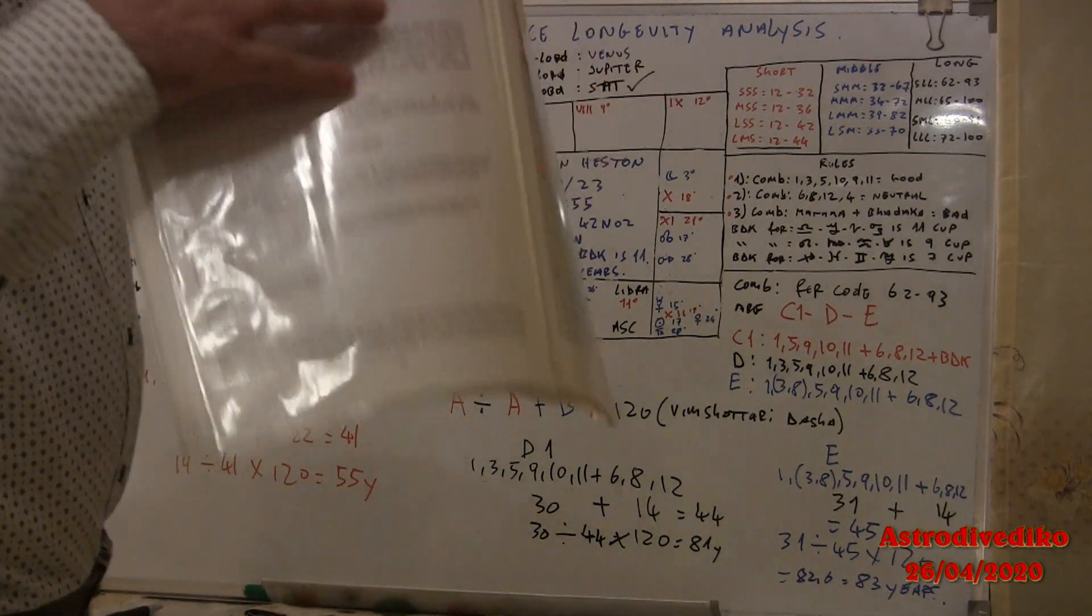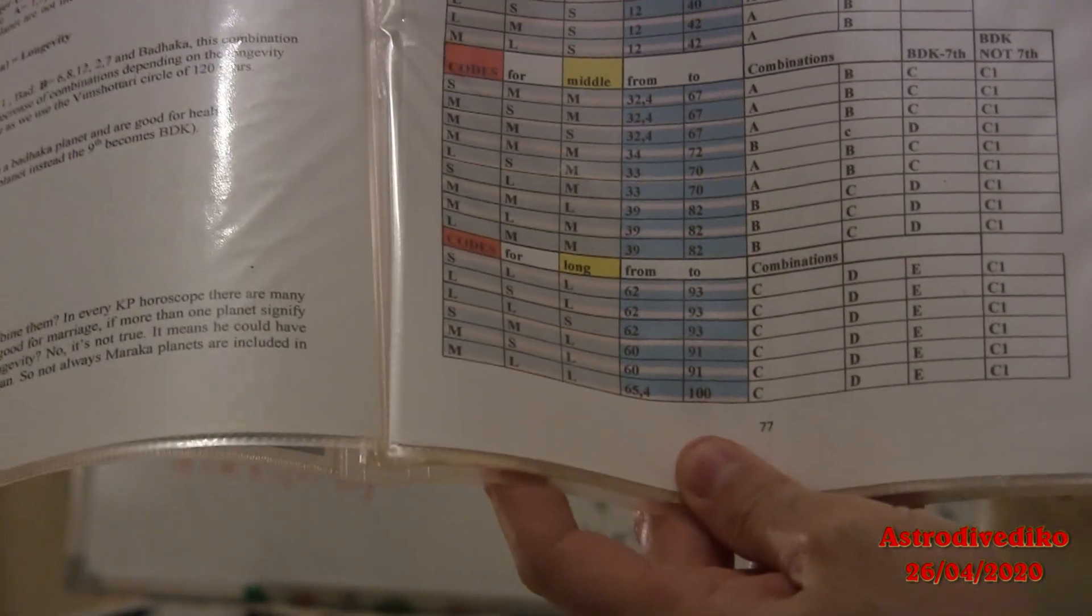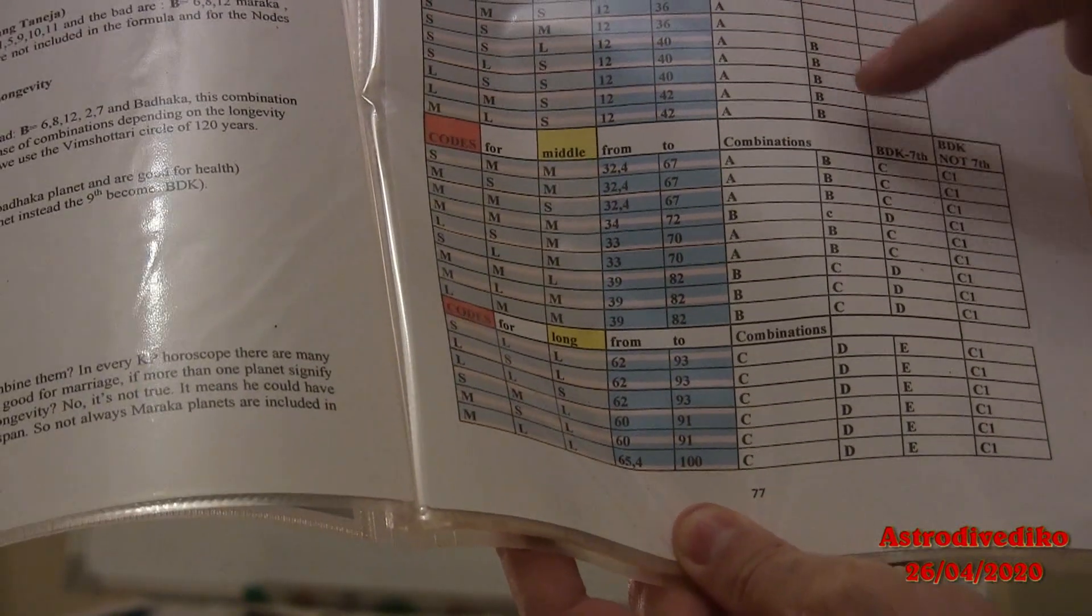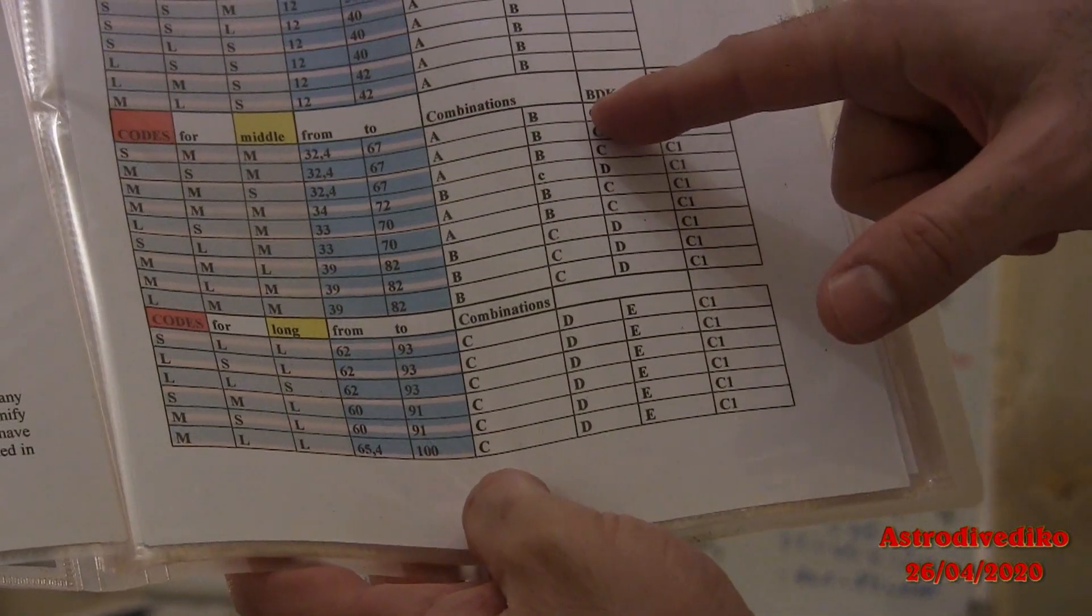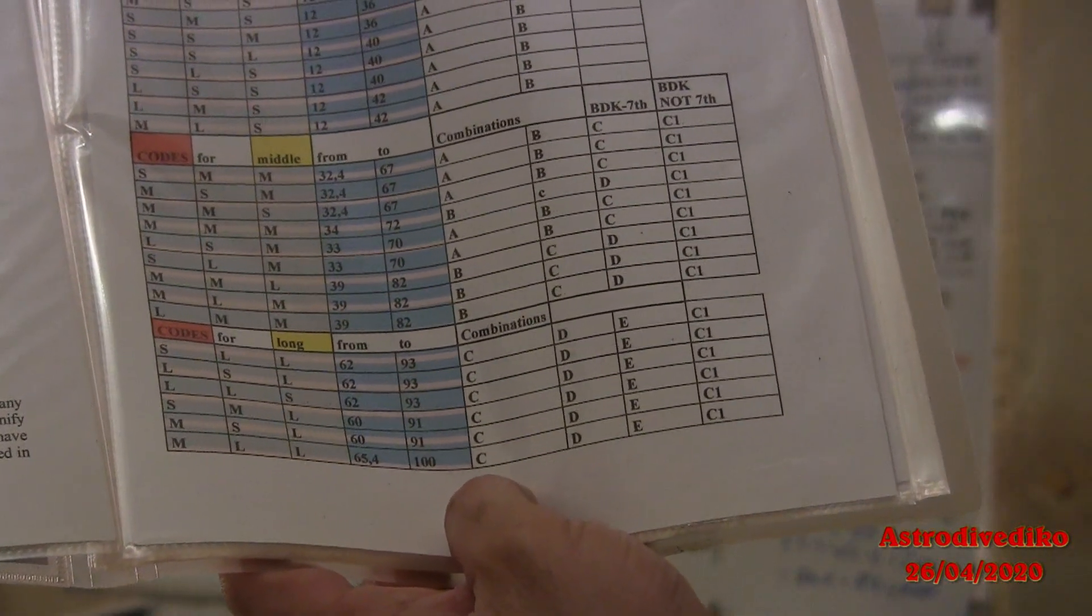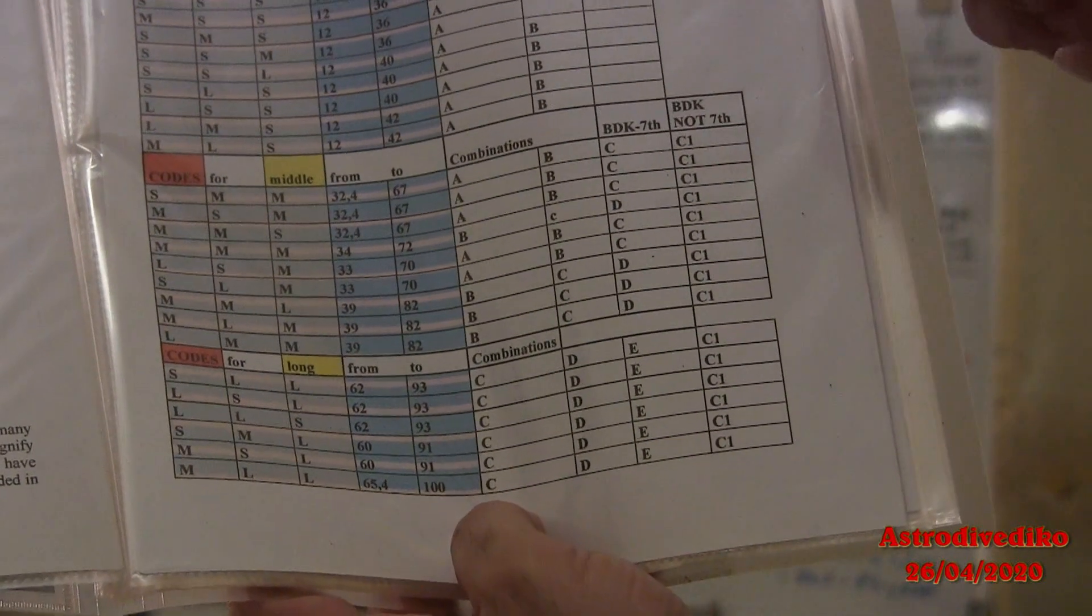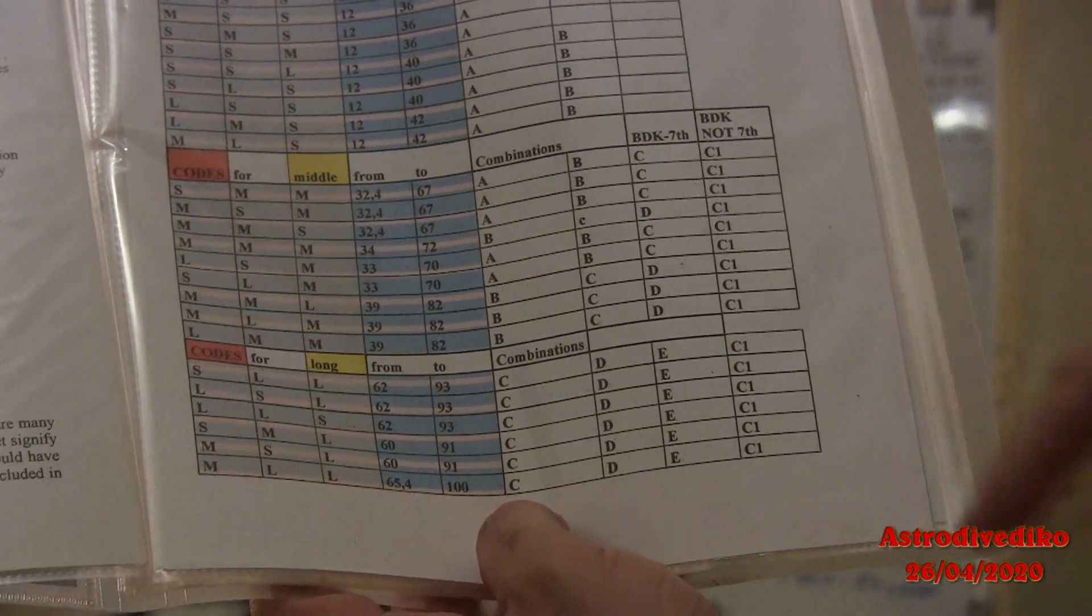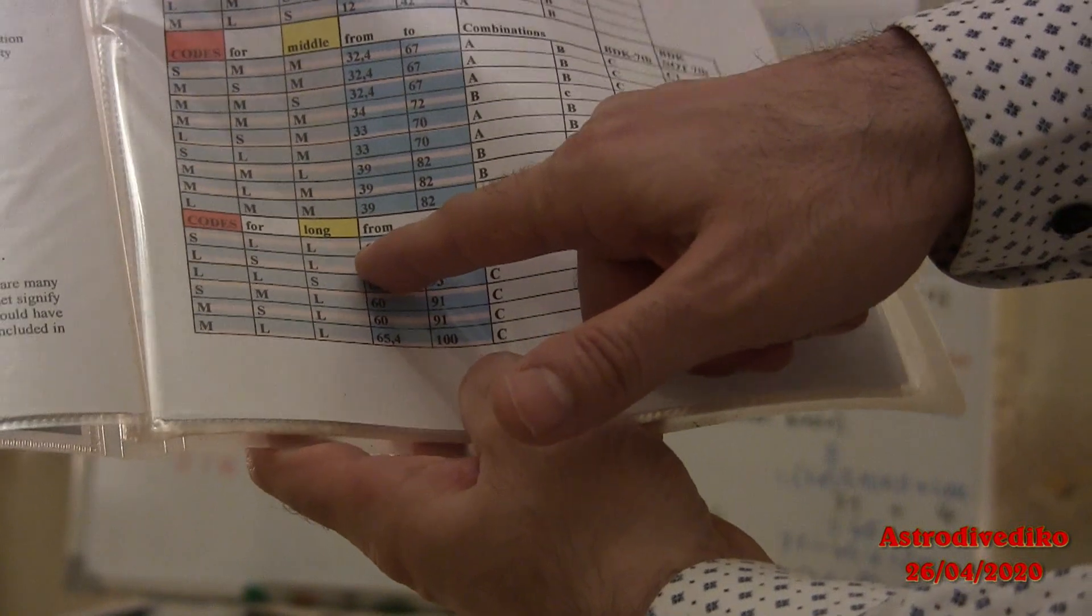So now, these are the combinations in the article. The short code use combination A and B. The middle life combinations formally use A, B, C, C1. If the Badaga planet is not the seventh, you use formula C. Instead, if the Badaga planet you have ascendant in dual sign, you must use formula C1. And to end, the combinations for long life if the code is from 60 to 93 years like in Charlton Heston case, you use C, D, E formulas.